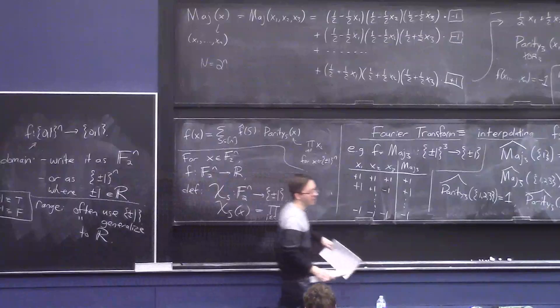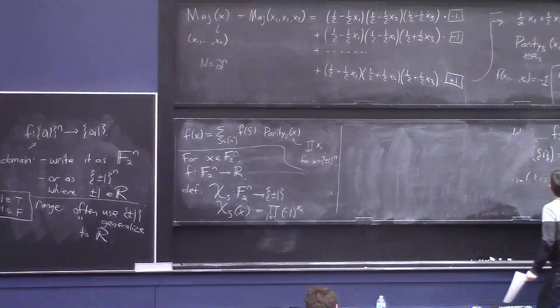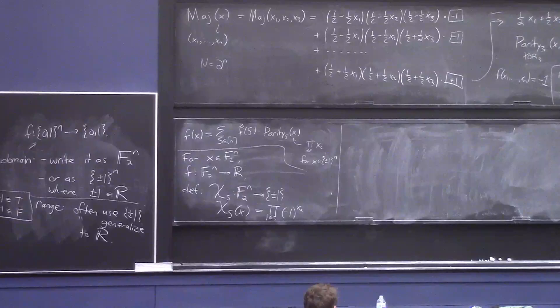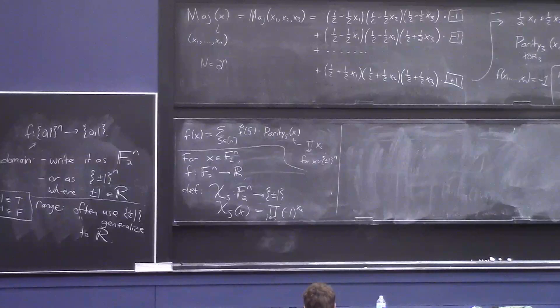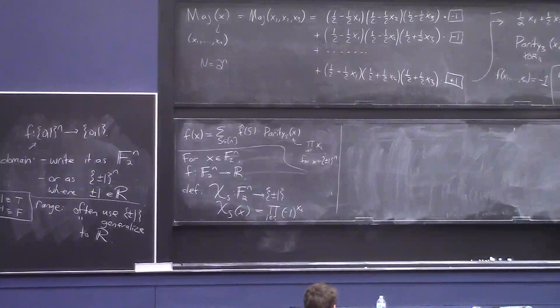Let's think about the evaluation question again. Say I gave you a bunch of coefficients for a multilinear polynomial, and I want to know what Boolean function it's representing — what is the truth table associated to this multilinear polynomial? Well, you just plug in all possible Boolean strings to the polynomial and find out what the 2^n values are. But let's do that using matrices.